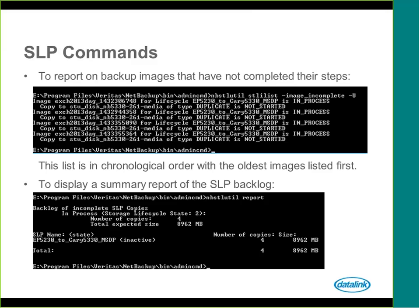To display a summary report of the SLP backlog, in this case we only have one inactive SLP with four copies that have not completed. The total expected size is the front-end size — what was actually protected. So if you're going from a deduplication device for the backup step, you will not see the deduplicated size in this report; you will see the full image size of what was protected. Sometimes that can look scary when you see terabytes in the backlog, but with deduplication going OST to like-OST device, you're not actually going to be replicating that entire amount of data.